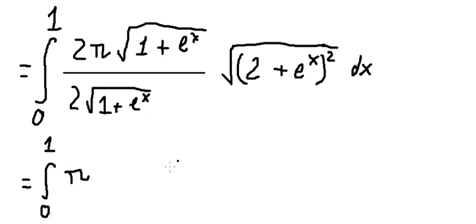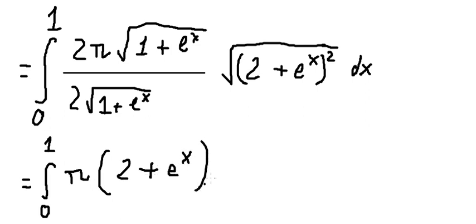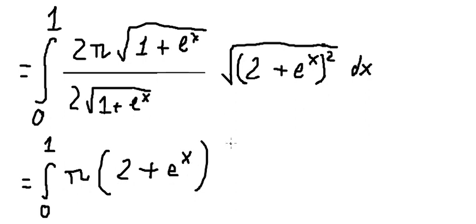After simplifying, we have 2 plus e to the power of x. Since the bounds are from 0 to 1, everything in this range is always positive, so we can confirm the result is the positive expression 2 plus e to the power of x.